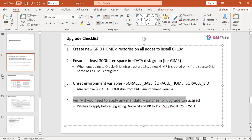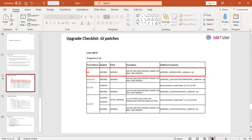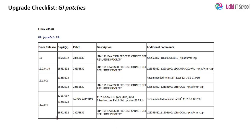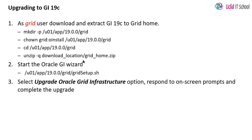Next, verify if you need to apply any mandatory patches for the upgrade to succeed. This is a very important step. We have already applied the mandatory patch during Grid Infrastructure installation. The patch number 28550.3832 is required when upgrading from 18c to 19c, which we applied in the previous session. So we have already applied the mandatory patch and are now ready for upgrading Grid Infrastructure to 19c.